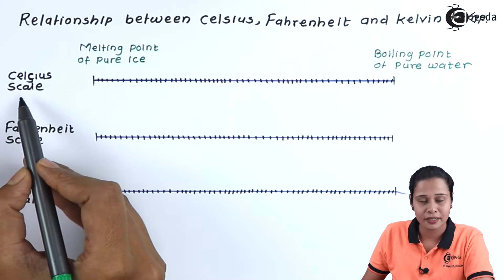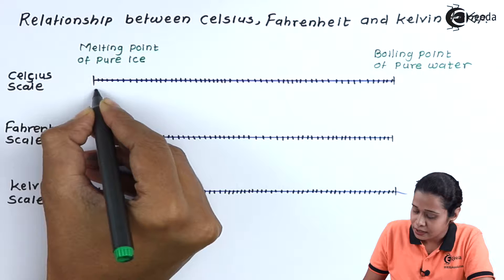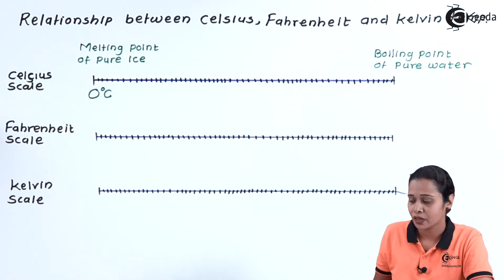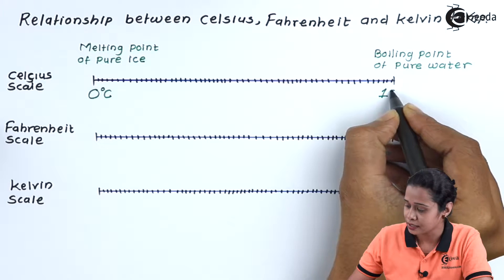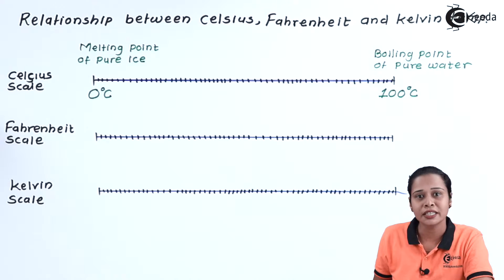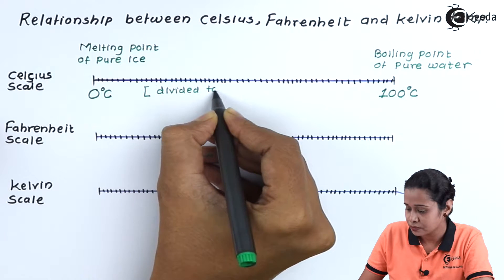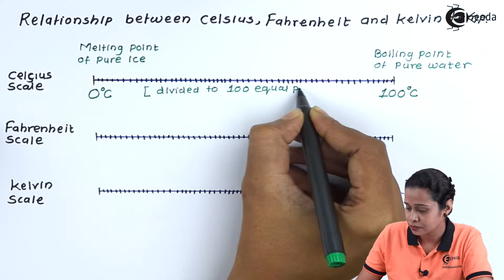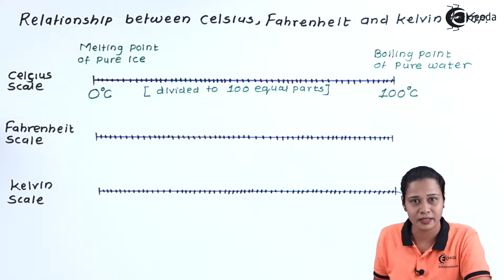On the Celsius scale, the melting point of pure ice is 0 degree Celsius, and the boiling point of pure water at atmospheric pressure is 100 degree Celsius. The scale is divided into 100 equal parts, so one part is equal to 1 degree Celsius.